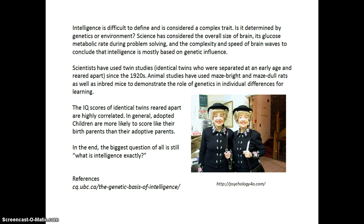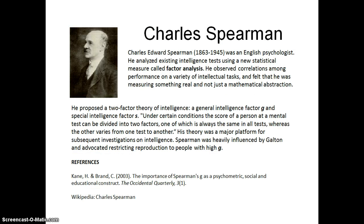But in the end, the biggest question of all is still: what exactly is intelligence? Charles Spearman was an English psychologist who analyzed existing intelligence tests and scores using a statistical measure called factor analysis. He proposed a theory with two factors of intelligence — the general intelligence factor called the G factor, and a special intelligence factor called the S factor.